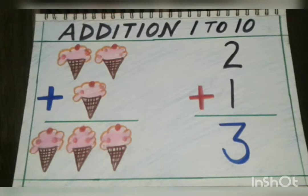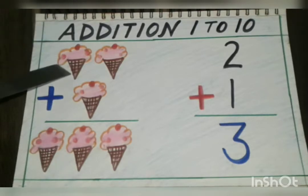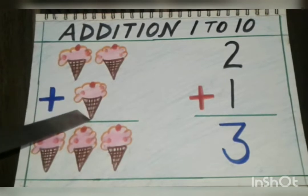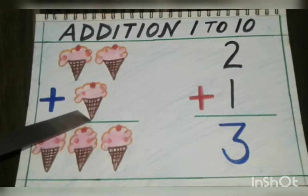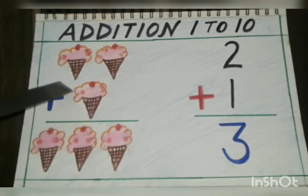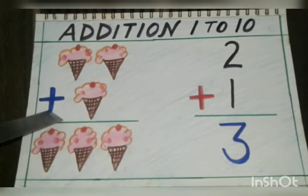So let's understand how we do addition in vertical way. Let's take an example. I have two ice creams and my mother gave me one more ice cream. So how many total ice creams I have?